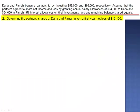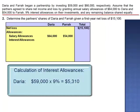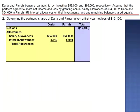Requirement 2 asks us to go through the same process, assuming that they had a first-year net loss of $15,100. The process doesn't change. We still begin with the income statement amount — in this case a loss of $15,100. We still recognize the allowances: salary allowances of $64,000 and $54,000, and interest allowances of $5,310 and $5,940. Total allowances remain at $69,310 and $59,940 for a total of $129,250. Subtracting the allowances from the income statement amount, negative $15,100 minus $129,250 gives a balance of income of negative $144,350.